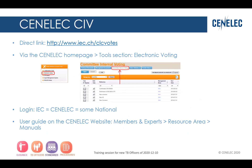You have a direct link to access the platform, but it can also be accessed from the CENELEC homepage — which is obviously the easiest way. You just connect to the website and it's on the right-hand side in your toolbox with all the interesting accesses. There's also a user guide which is quite detailed available on the CENELEC website. If you go to the Member and Experts resource area manuals, it's there and you can have a read.